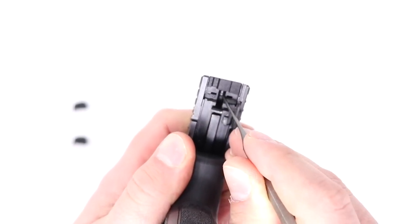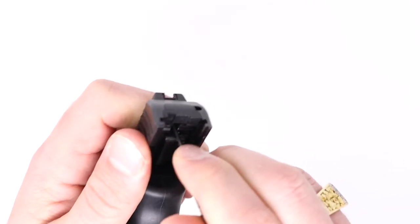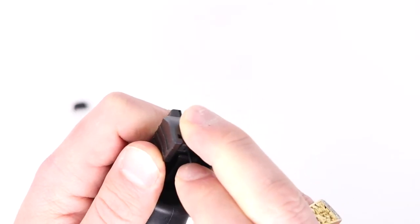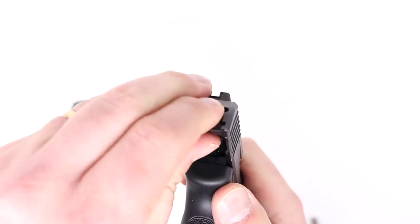There's going to be a small slot in the striker assembly. You've got to get your punch in there and push down. Once you do that, the slide plate will just slide right out like that. You can take the OEM slide plate out.